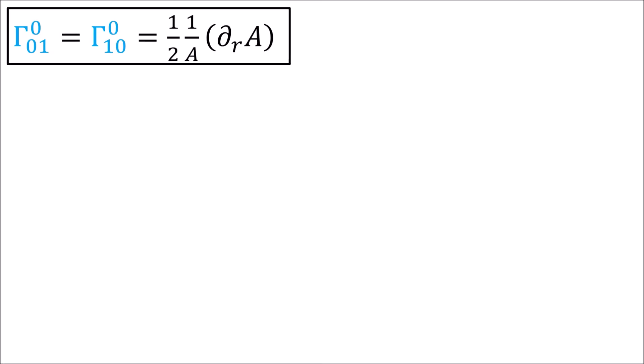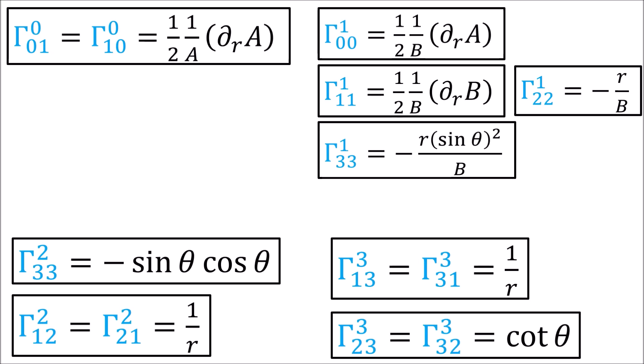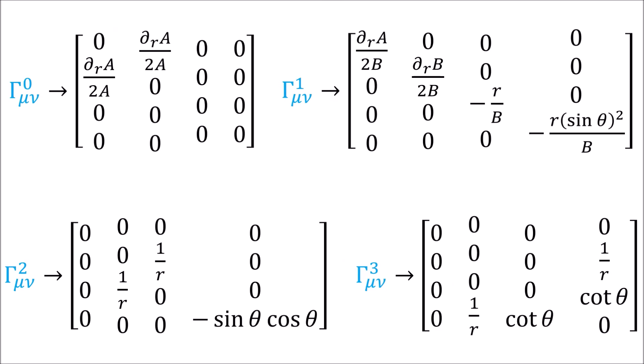So now we have all 9 of the independent non-zero connection coefficients, and these coefficients should be the same in both the mostly minus and mostly plus metric conventions. If you want to view these connection coefficients as arrays, they would look like this.